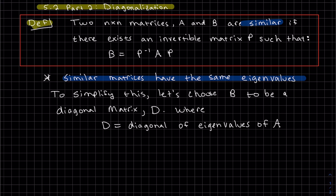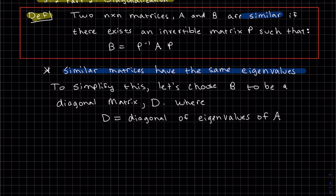So to simplify this, we're going to choose B to be a diagonal matrix D, where D is going to be our diagonal of eigenvalues of A. So we will have to have N eigenvalues. But you can see, in choosing P, we are going to have to have a P that's invertible because, of course, we need its inverse.